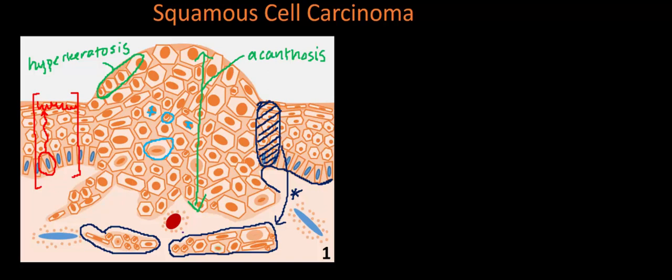The fourth feature: the speckled dots drawn in the dermis around the blood vessels represent an infiltrate of inflammatory cells, with the body trying to mount an immune response against the atypical cancerous keratinocytes. This is a common theme across many skin cancers — an inflammatory cell infiltrate associated with these lesions histologically.